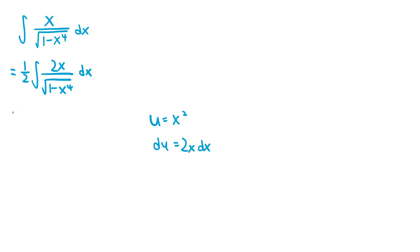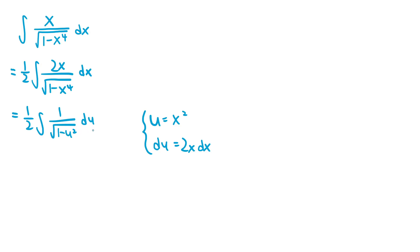If we do the substitution, this becomes 1 half times the integral of 1 over the square root of 1 minus u squared du, since the 2x dx is replaced with du, and since x to the fourth is equal to x squared all squared, the x to the fourth is replaced by u squared. So the integral of 1 over the square root of 1 minus u squared is a standard integral and it's equal to arc sine of u, since the derivative of arc sine of x is 1 over the square root of 1 minus x squared.